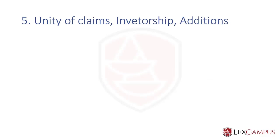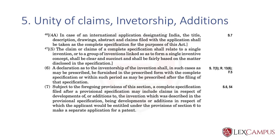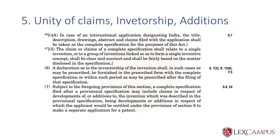The fifth thing to remember is unity of claims, inventorship, and additions. Section 10.4(A) generally says that in the case of an international application designating India, the title, description, drawing, abstract, and claims filed with the application shall be taken as complete for the purposes of this act. Section 10.5(A) talks about unity of invention, stating that a claim shall relate to a single invention or to a group of inventions linked so as to form a single inventive concept. The claims shall be clear and succinct and shall be fairly based on the matter disclosed — meaning you cannot have a claim which you have not described; the claim should flow out of the description.